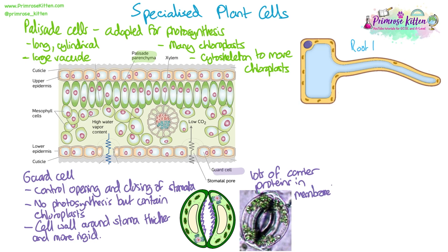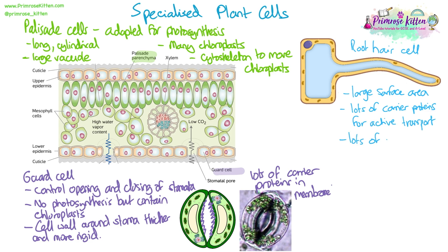Root hair cells make up plant roots and have long projections that give them a large surface area. They have lots of carrier proteins in their membrane because they carry out a lot of active transport. They have lots of mitochondria to produce the large amounts of ATP required for active transport of mineral ions into the cell. They also have a large vacuole, which allows them to control water movement into and out of the cell.